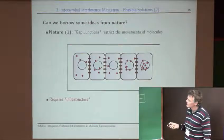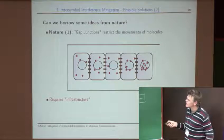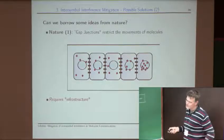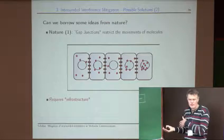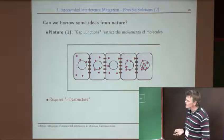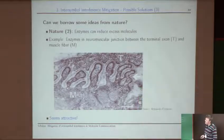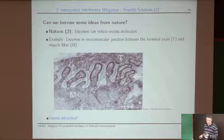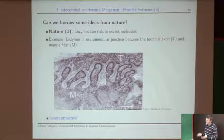One nature-based option is gap junctions, which restrict molecular movement and avoid these tails — but that would require infrastructure, defeating our purpose. Another mechanism nature uses is enzymes to reduce excess molecules. For example, in the neuromuscular junction, enzymes degrade neurotransmitters to enable faster signaling. This enzyme mechanism is exactly what we want to use in our system.